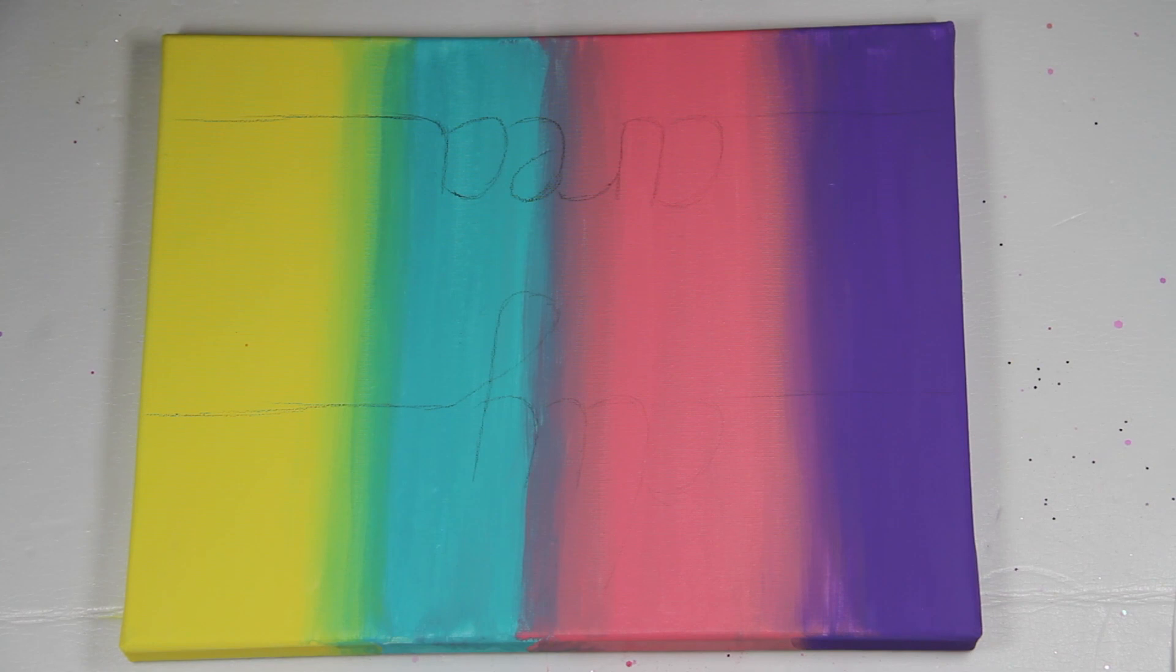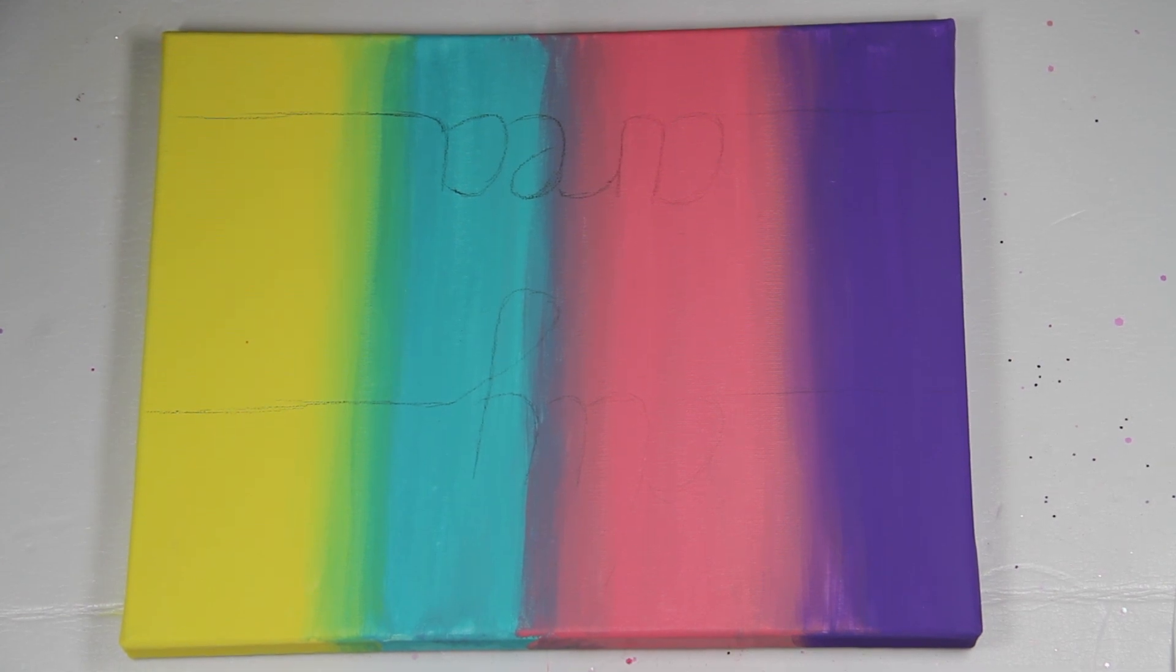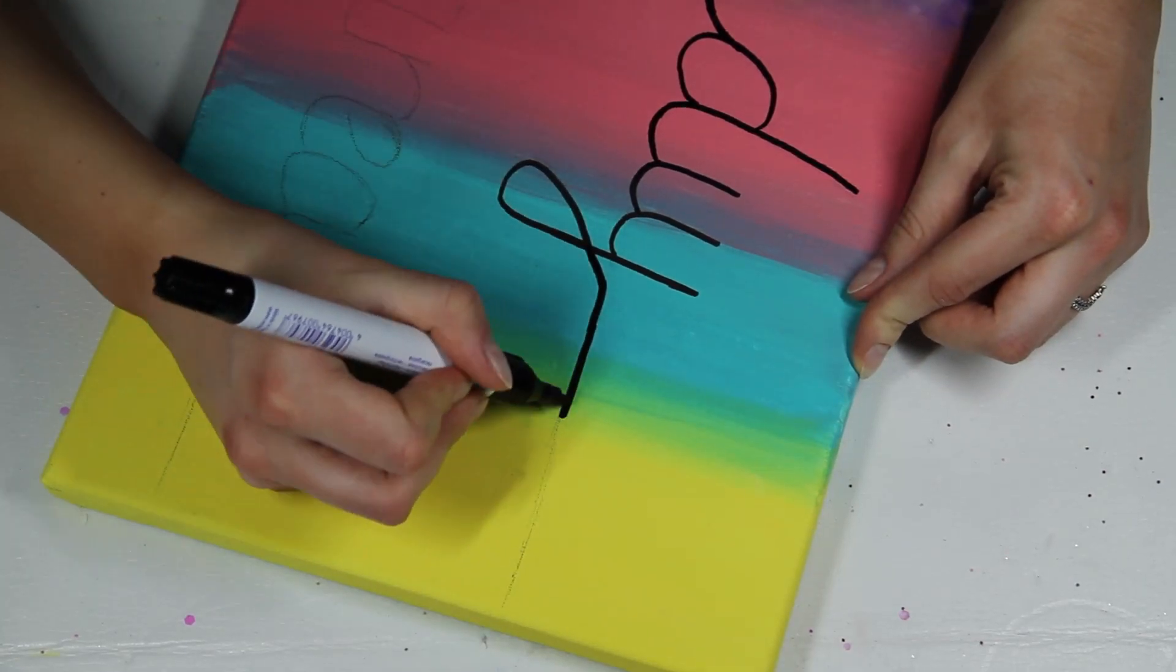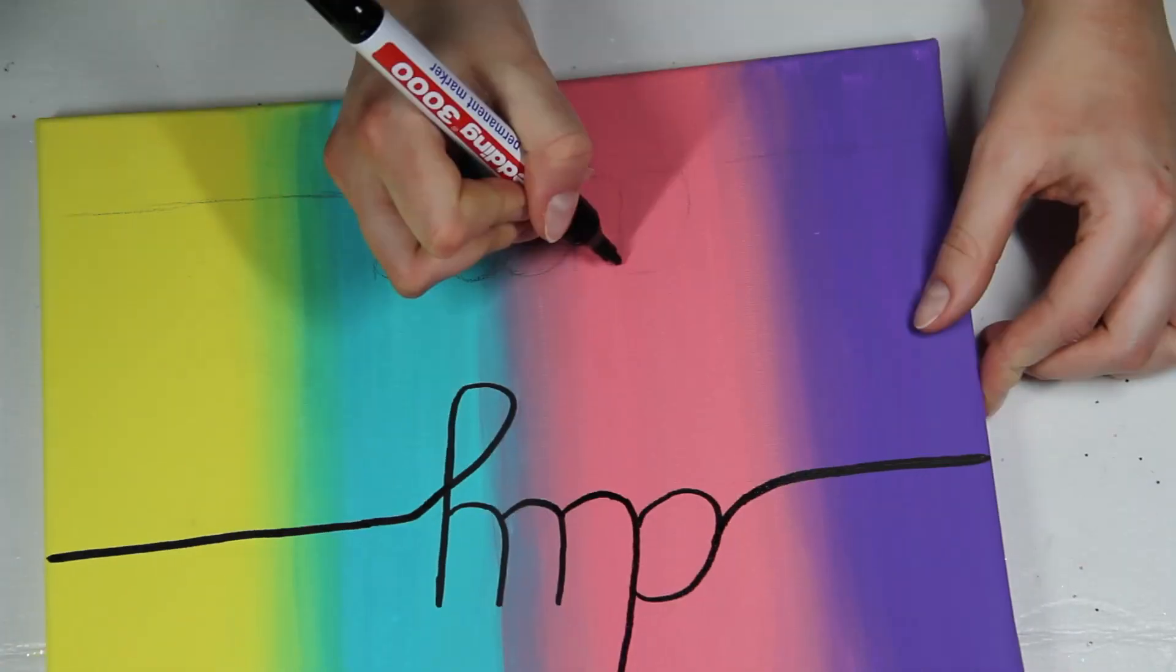In the next step I sketched out the writing that I want to have on there so I don't mess it up with the marker later. And when you're happy with it, just redo it with the marker.